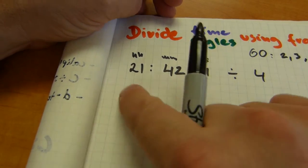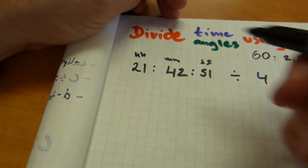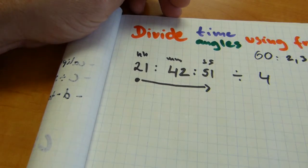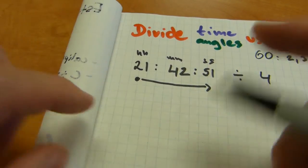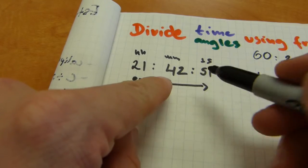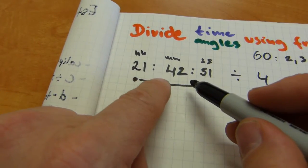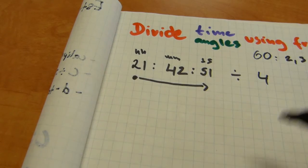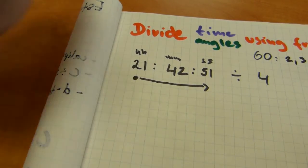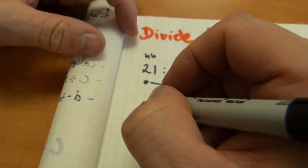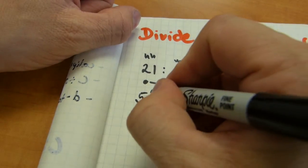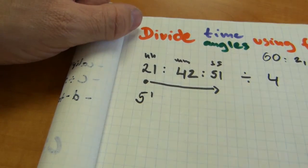I usually start at the hours column and go this way because that's how carrying over needs to be done. The fractional remainders will need to be carried over to the minutes and the fractional minutes will need to be carried over to seconds. Let's get started, 4 goes into 21, 5 times, 5 by 4 is 20 with a remainder of 1, that's not an exponent.